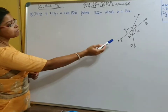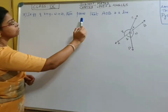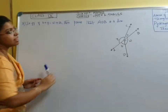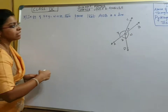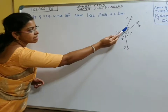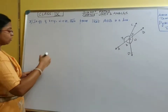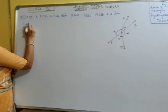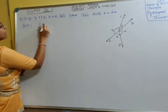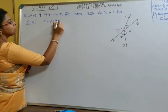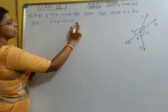So in the figure, x plus y is equal to w plus z. Prove that AOB is a straight line. A line is nothing but a straight line, and these are the names of the angles: x, y, z, w. So we will solve this. Given: x plus y is equal to w plus z. This is the condition which is given.